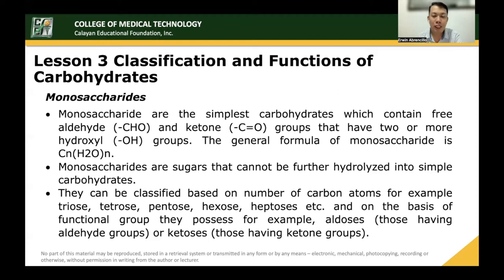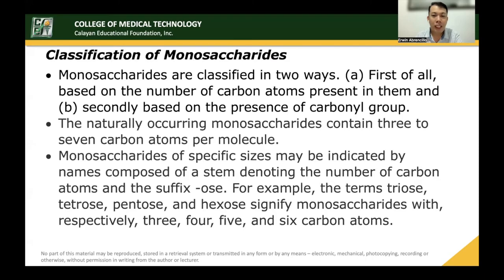On the basis of functional groups they possess, for example, aldoses are those having aldehyde groups, and ketoses are those having ketone groups. That's why when you name a triose, you can still add the aldehyde designation so that you can tell whether the compound has an aldehyde group or a ketone group. Monosaccharides are classified in two ways: first, based on the number of carbon atoms present; and second, based on the presence of the carbonyl group, whether it is an aldehyde or a ketone.